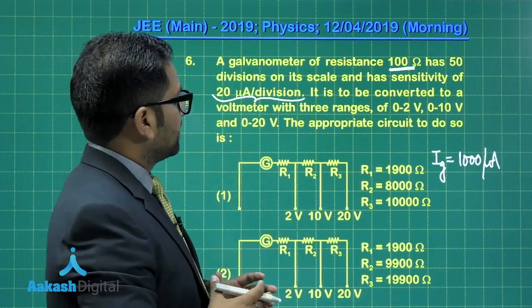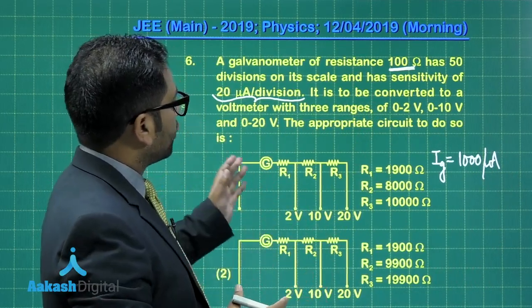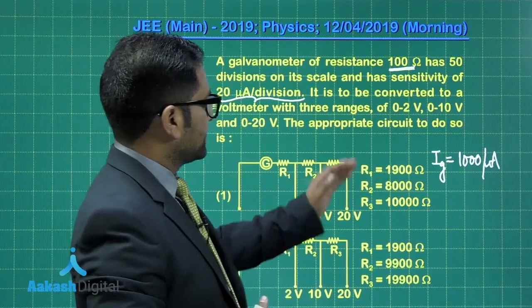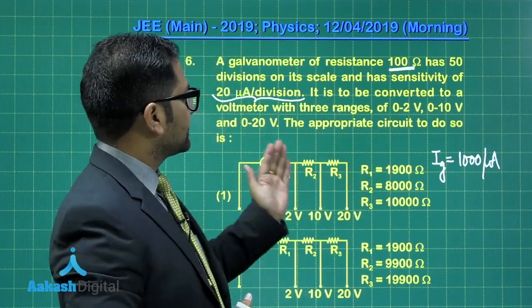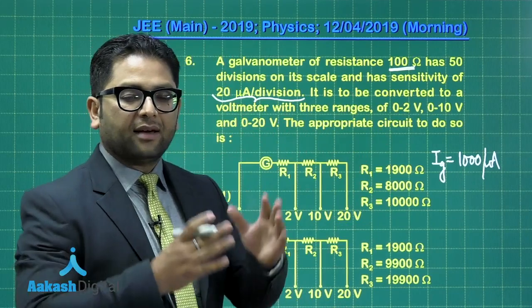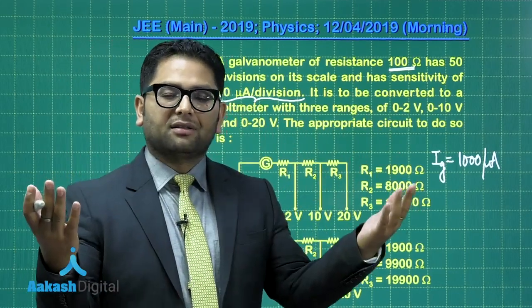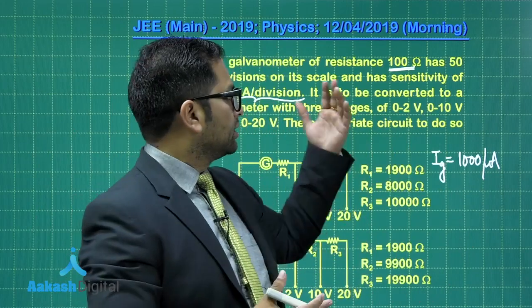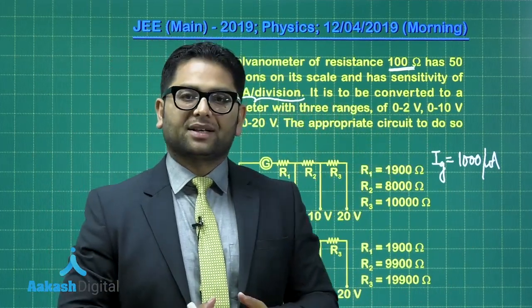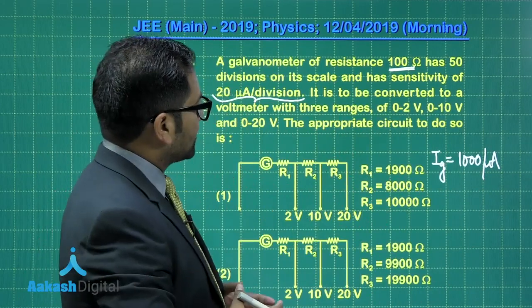Now, this galvanometer is to be converted into a voltmeter with three ranges, 0 to 2, 0 to 10, and 0 to 20. That means you need to convert this galvanometer into voltmeter of the ranges 2, 10, and 20 respectively. Let's see. In the first case, to convert to 2 volt, 10 volt, 20 volt voltmeter,